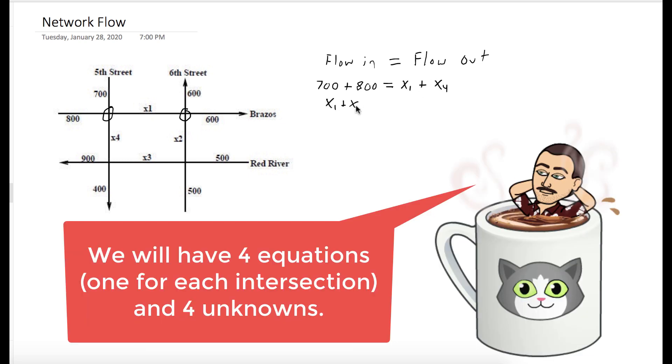Similarly with the next one, x1 plus x2 in, and 600 plus 600 out. For this next one, we have x4 plus x3 flowing in, and 900 plus 400 flowing out.